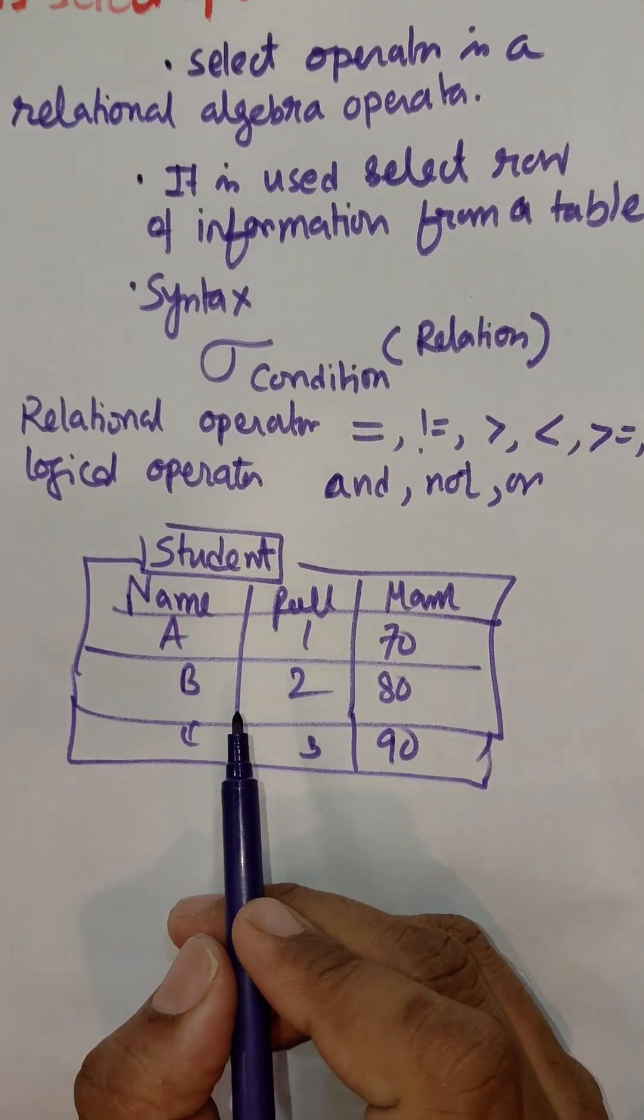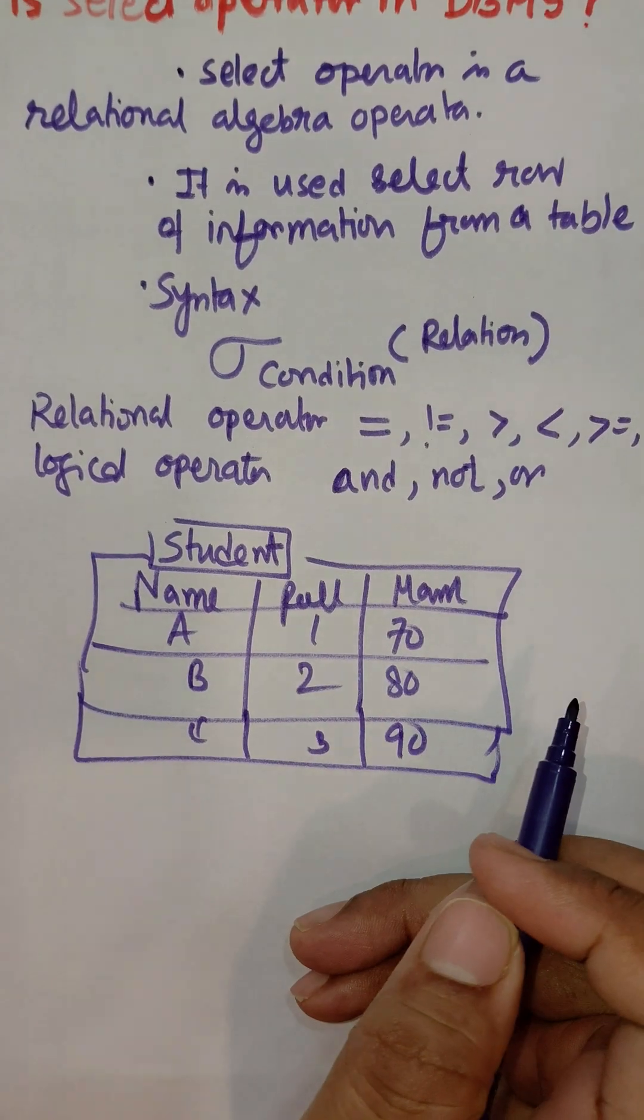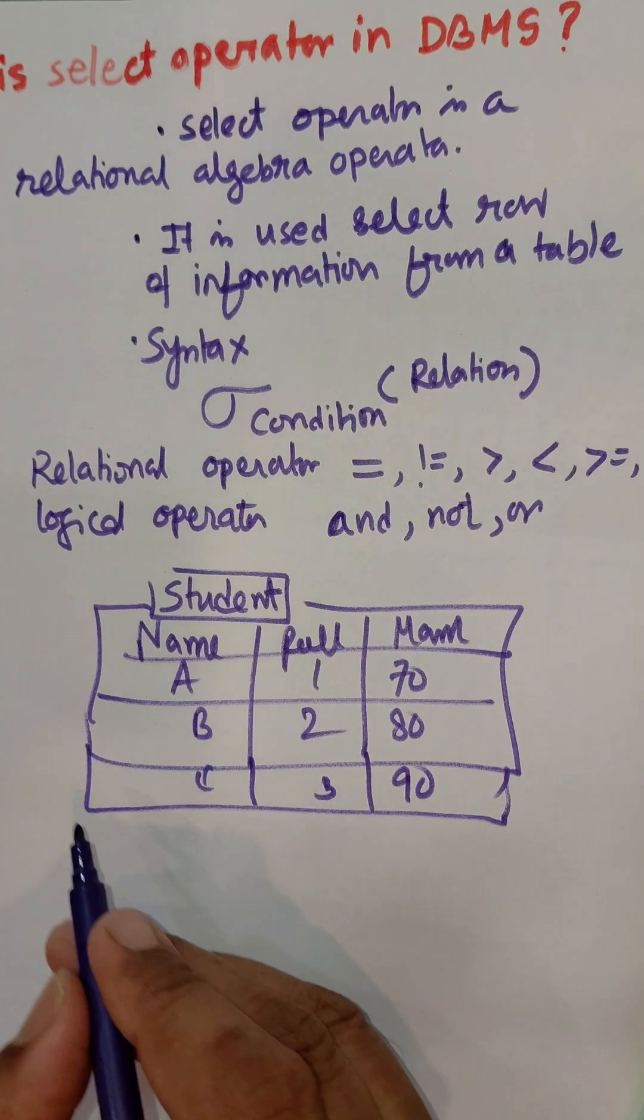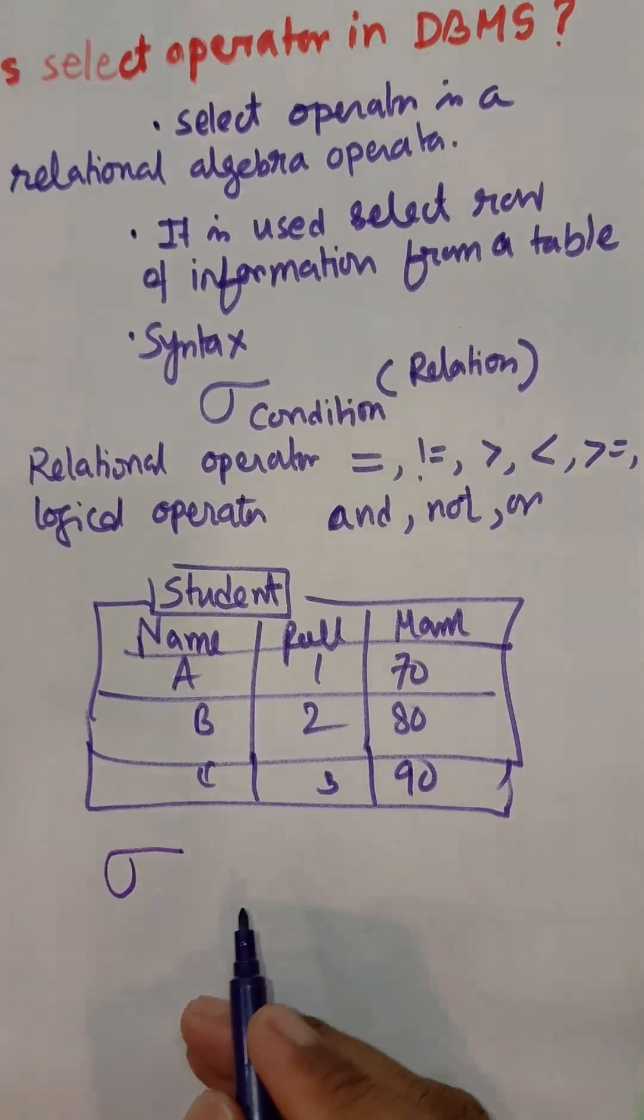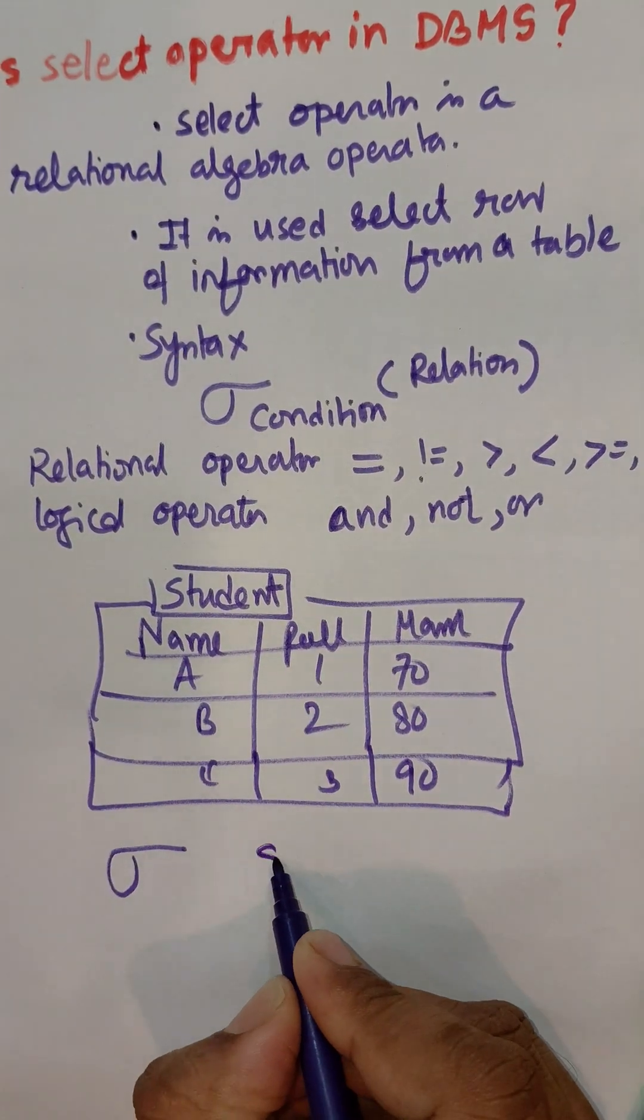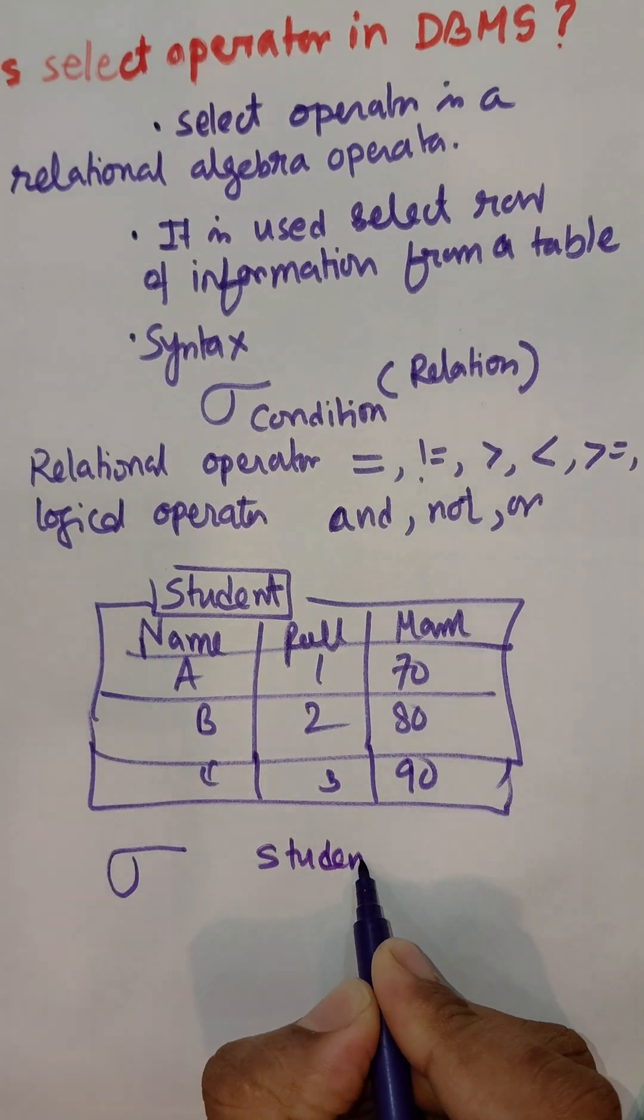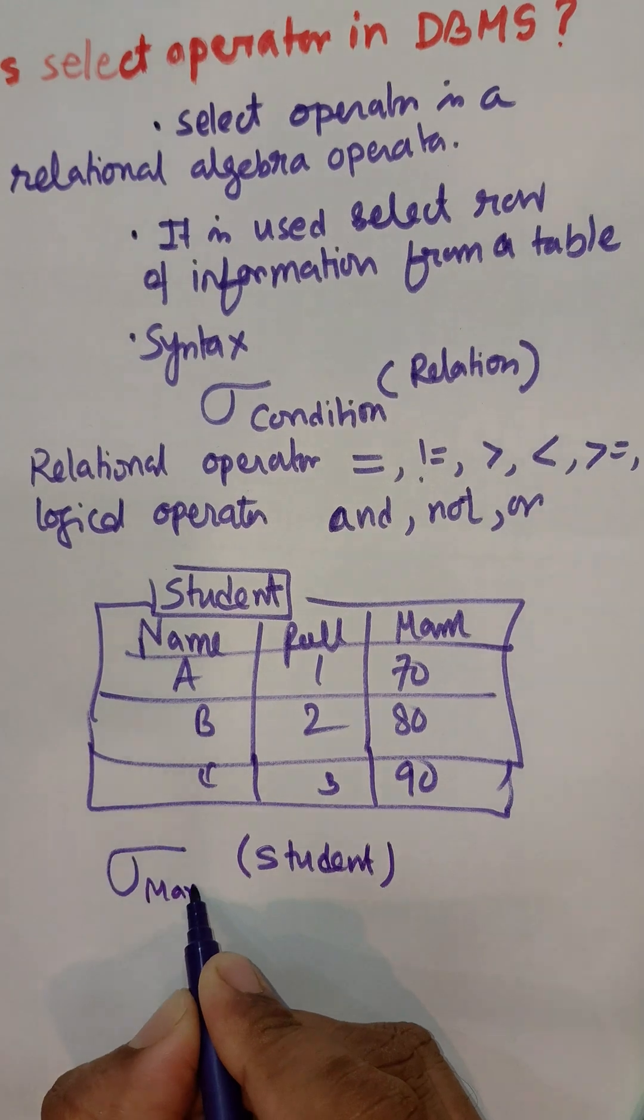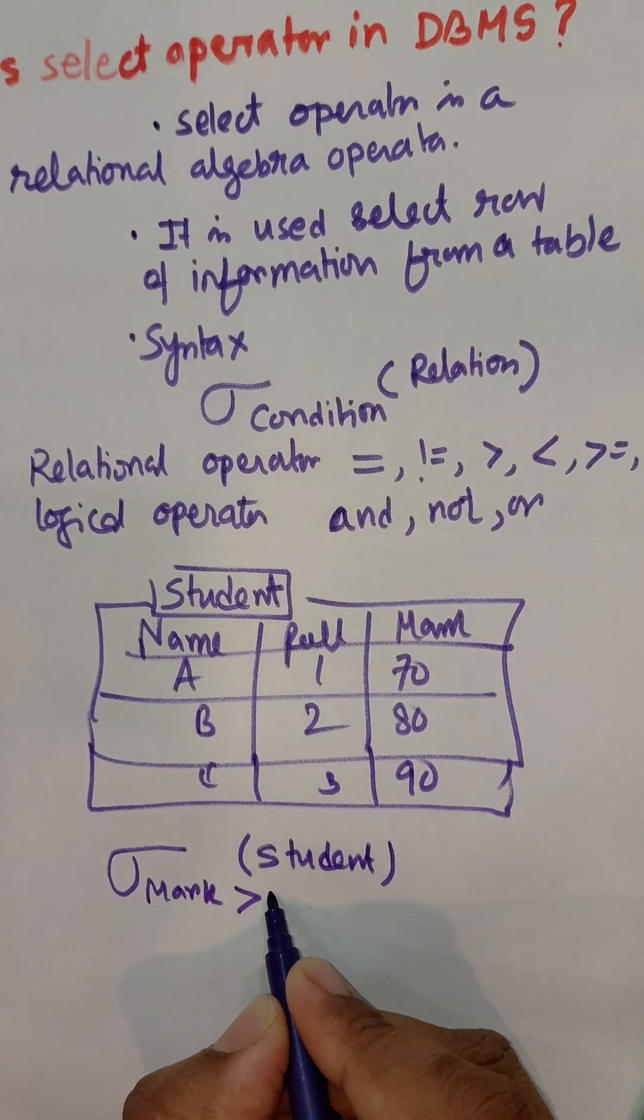Now suppose we need to select information whose marks are greater than or equal to 80 and less than or equal to 90. Then we write: Sigma Student with condition Mark >= 80 AND Mark <= 90.